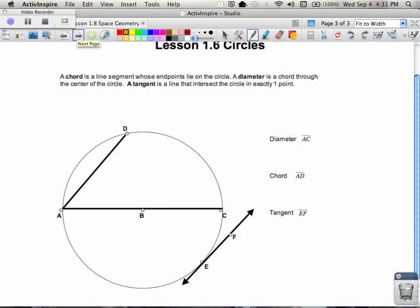Also in circles, there are certain straight things that could occur. The first straight thing that could occur in a circle is something called a chord. It's a line segment whose endpoints are on the circle. In this case, our chord in here is chord AD. Notice how it has a segment bar above it when you label it.